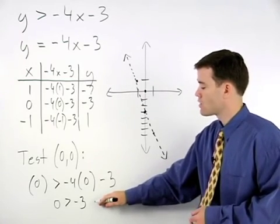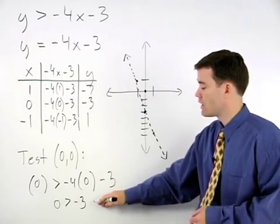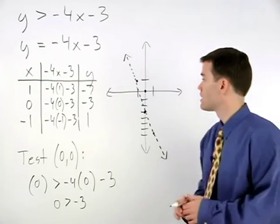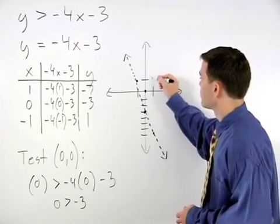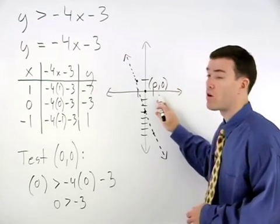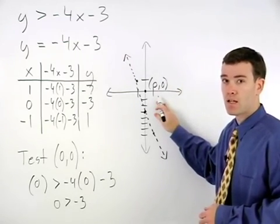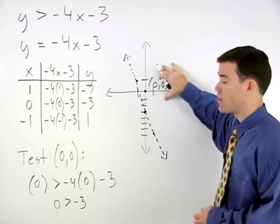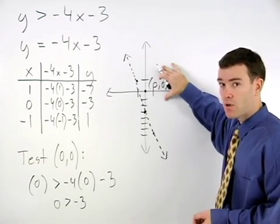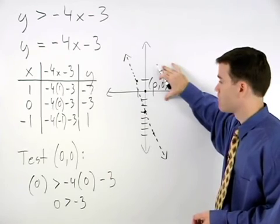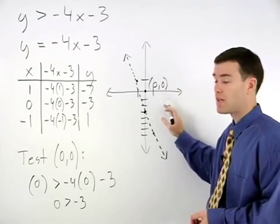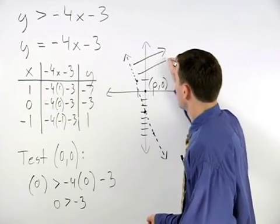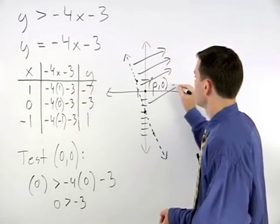Since 0 is greater than negative 3 is a true statement, that means the point 0, 0 is part of the solution set. And in fact, all points on this side of the boundary line will also be part of the solution set. So to represent this idea, we shade toward the point 0, 0.